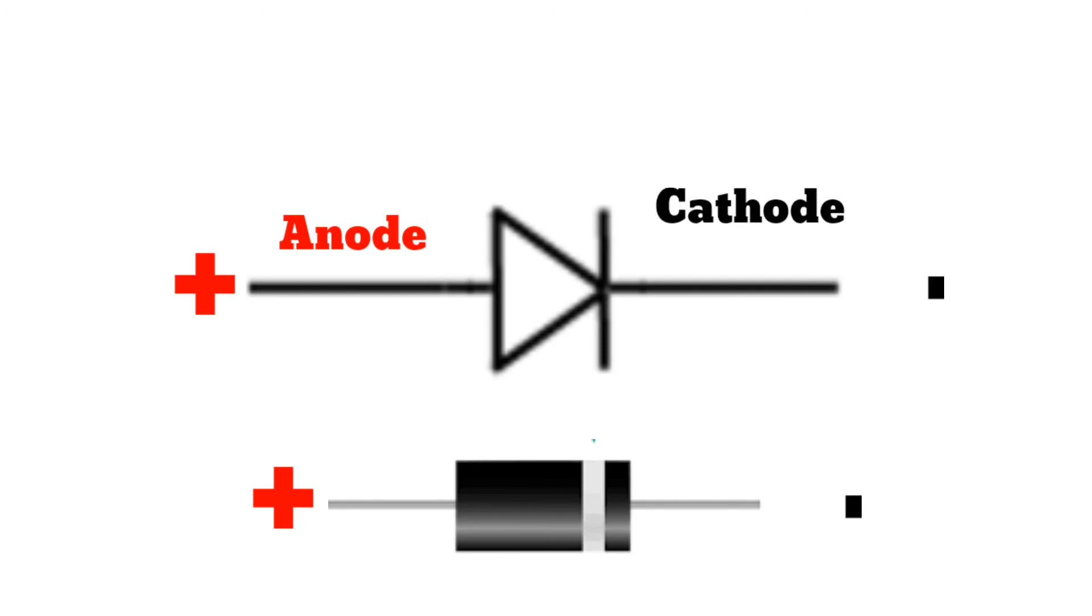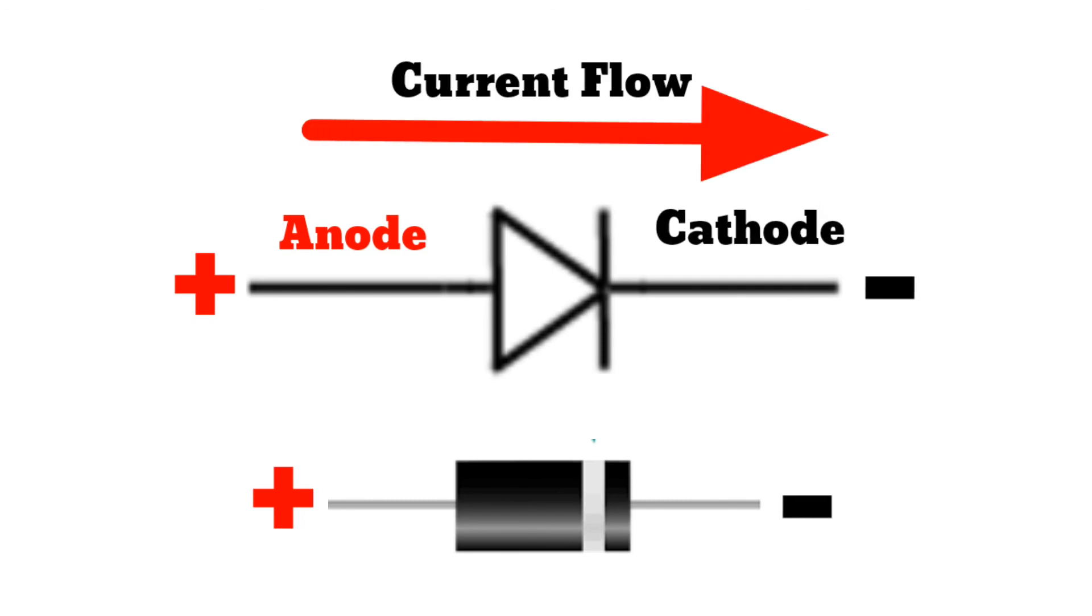A diode has two terminals. The positive side is called the anode, and the negative one is called the cathode. The diode circuit symbol with the anode and cathode marked.